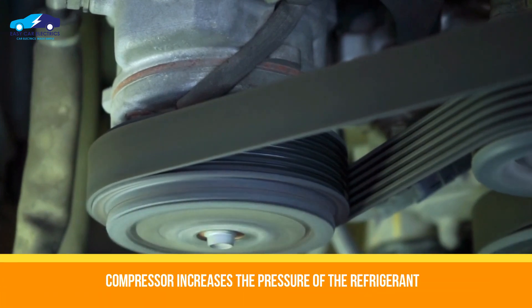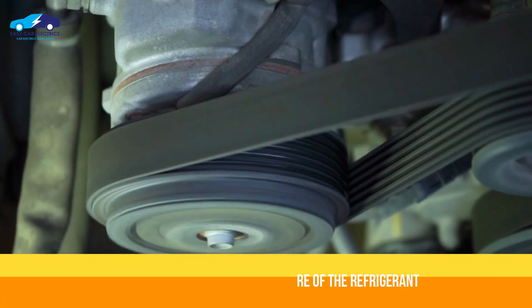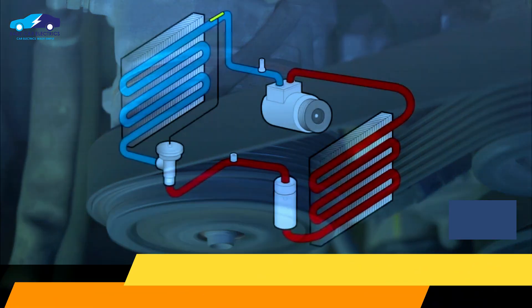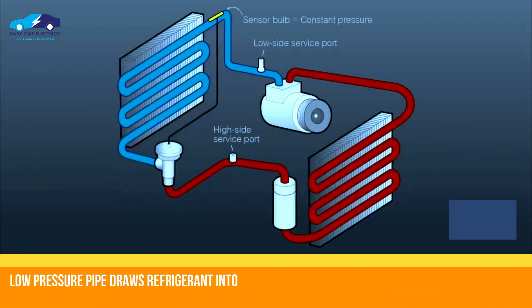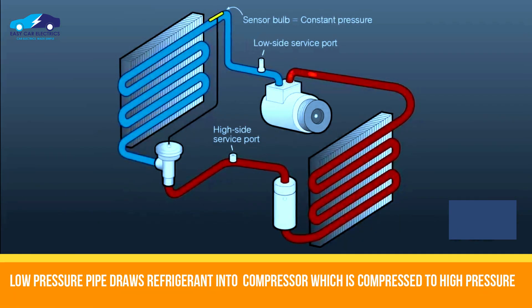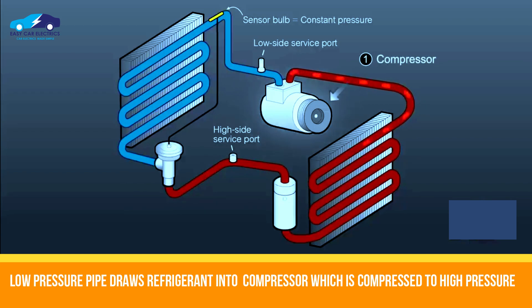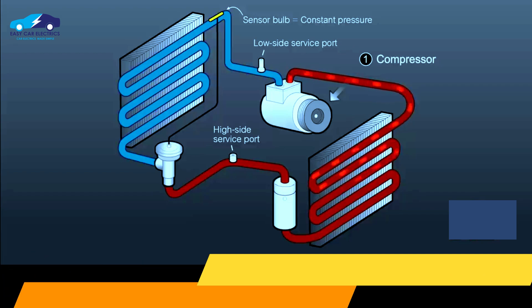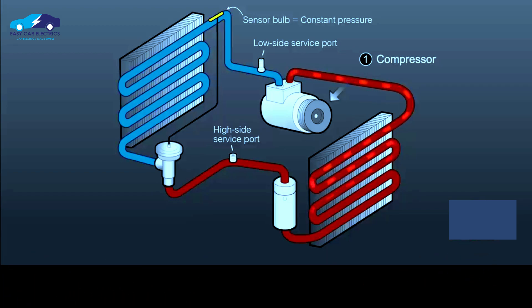The compressor increases the pressure of the refrigerant. The refrigerant is drawn into the compressor from the evaporator via a low-pressure pipe and compresses the vapor refrigerant into a high-pressure, high-temperature refrigerant.